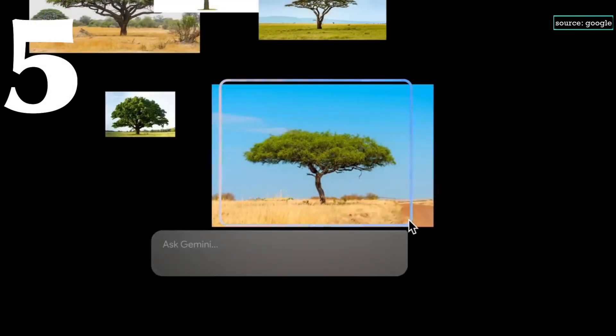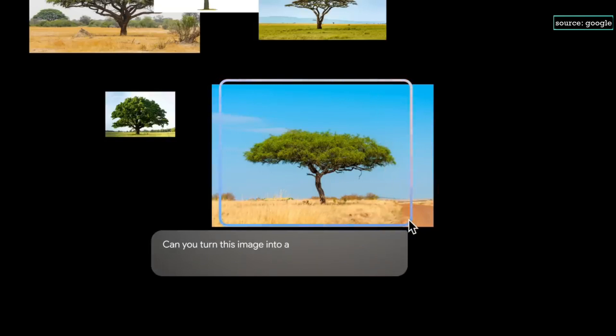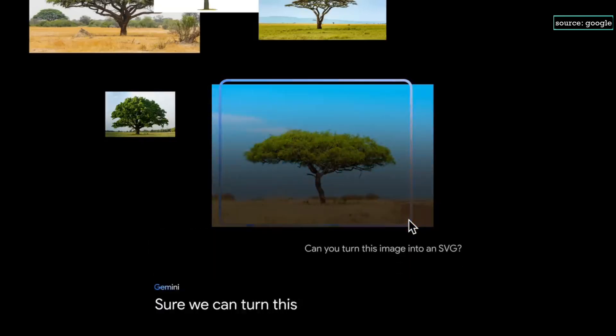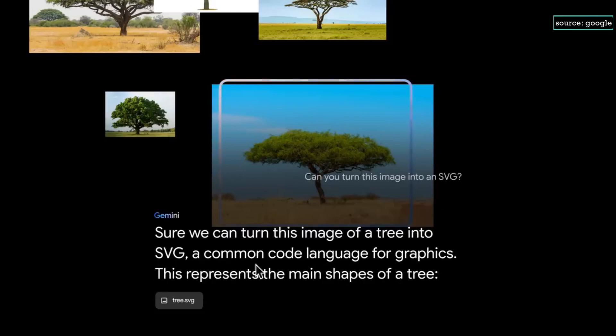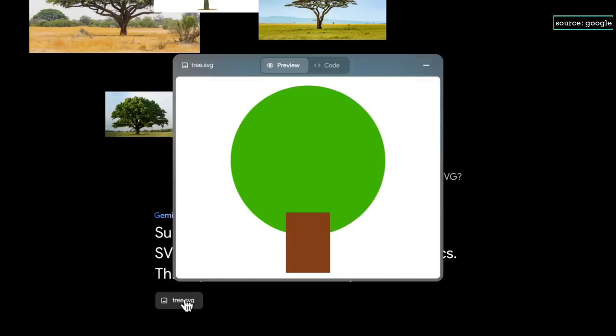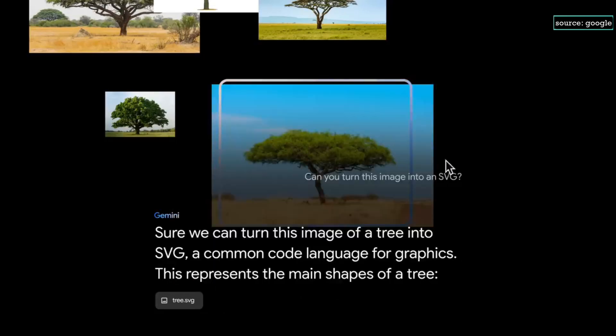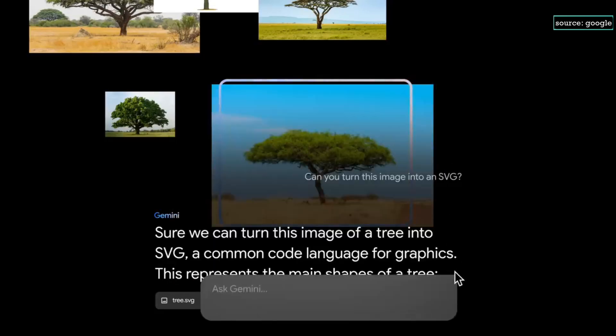And then ask Gemini, can you turn this image into an SVG? This represents the main shapes of a tree. Let's see. That's pretty good.